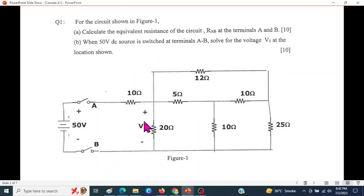Let us see. This is the question: for the circuit shown in figure, calculate the equivalent resistance of the circuit, RAB, at the terminal AB. This is terminal AB, so we have to calculate the equivalent resistance. This is part one.